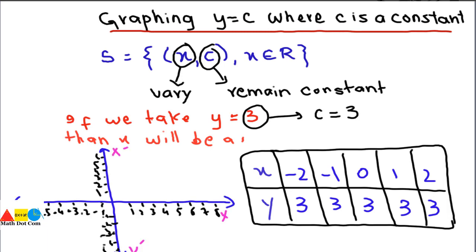Now let's draw the graph on the coordinate plane and start plotting the points. First, we have x equal to minus 2, and the corresponding value of y is 3, so the point is (−2, 3). Then we have (−1, 3). Then we have (0, 3) — when x is 0, the point lies on the y-axis.